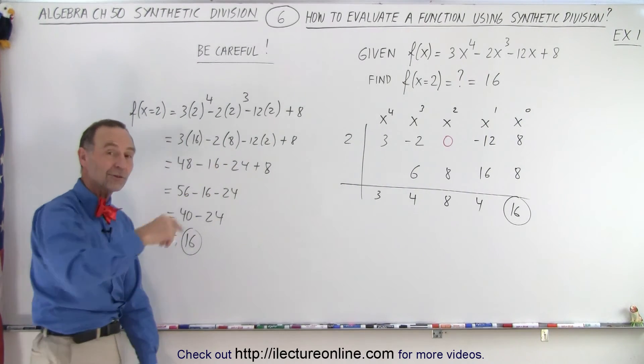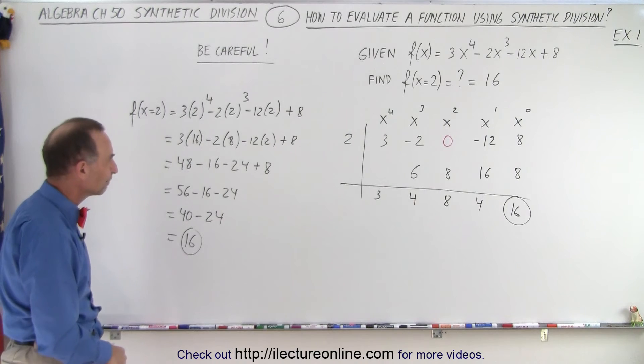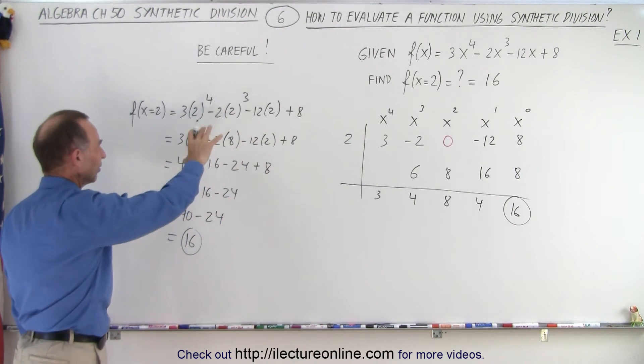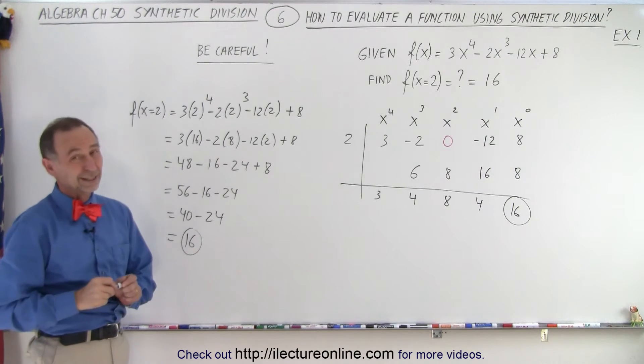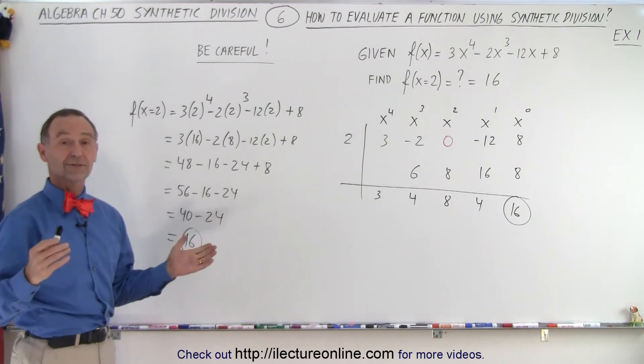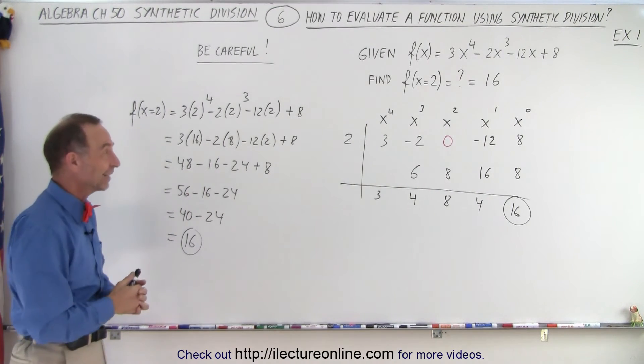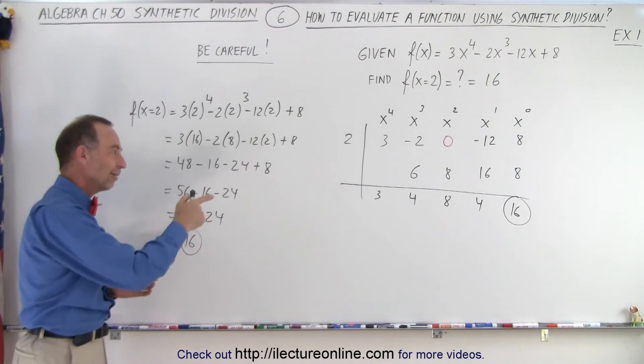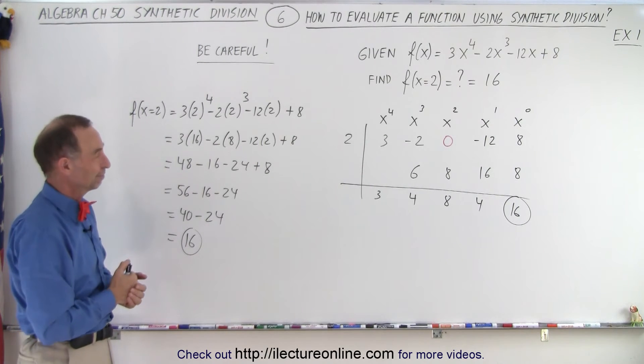Ah, look, we got the same result. So we did it correctly. I like that. This is much faster, much simpler, much easier than doing it like this. Of course, if you have a calculator, who cares? You can do it with any method. It's easy with a calculator. But working it out quickly like that by hand, that is definitely the superior method. And I like it. It's fun.